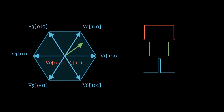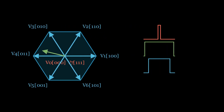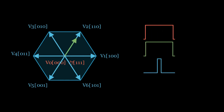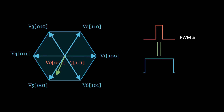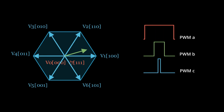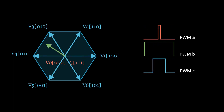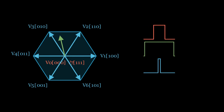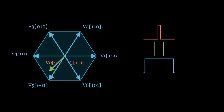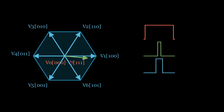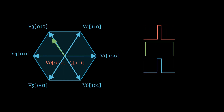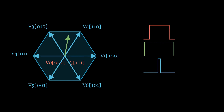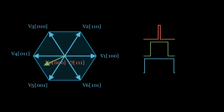Now, let's see how these output vectors are translated into PWM signals. On the right, we can see three PWM signals representing the three phases A, B, and C. The pulse width of each of these waves is dynamically calculated based on the position of the output vector in the hexagonal field. As the output vector rotates, we can see dynamic changes in the duty cycle of the three PWM signals. Each vector position produces a unique duty cycle combination in each phase.